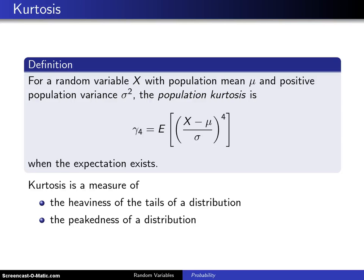Here is the definition of the population kurtosis for a random variable X, could be discrete, could be continuous, with population mean μ and positive population variance σ².